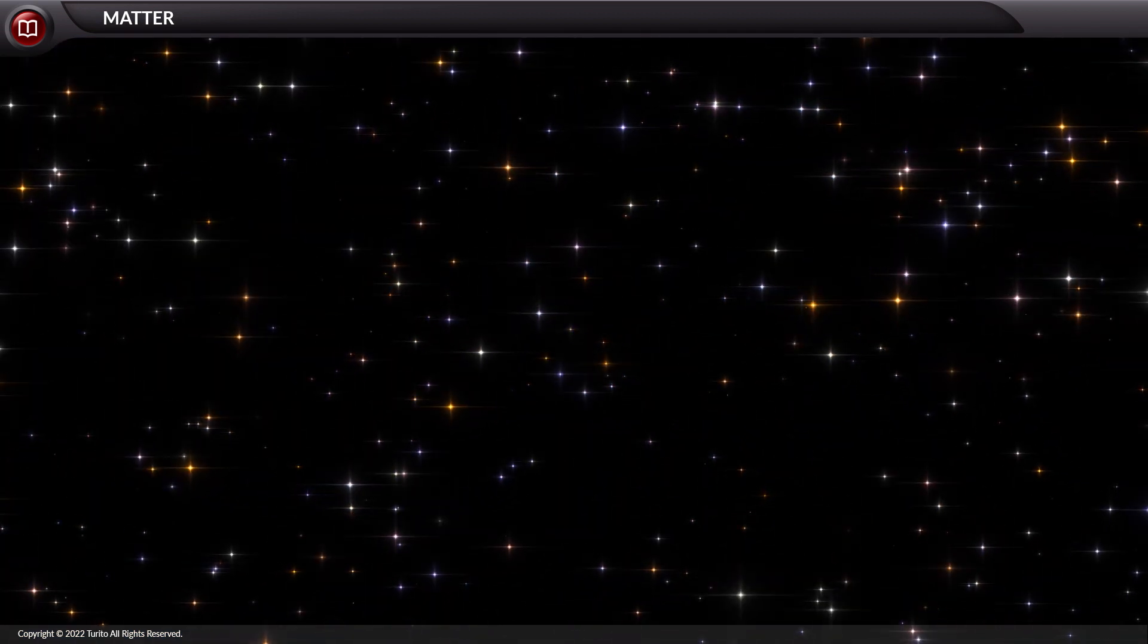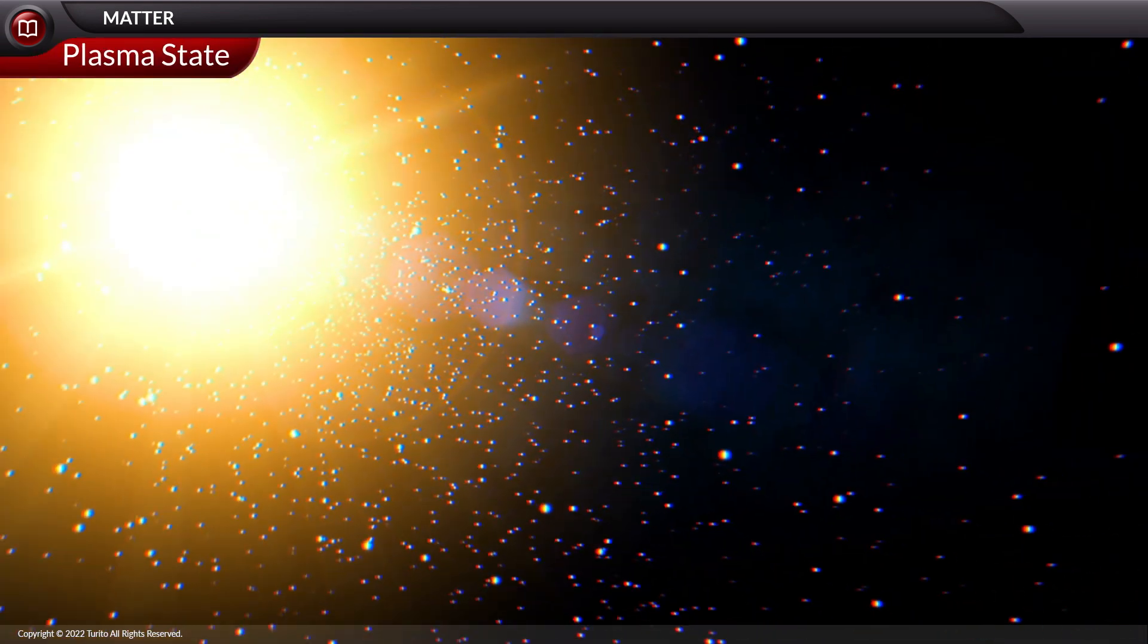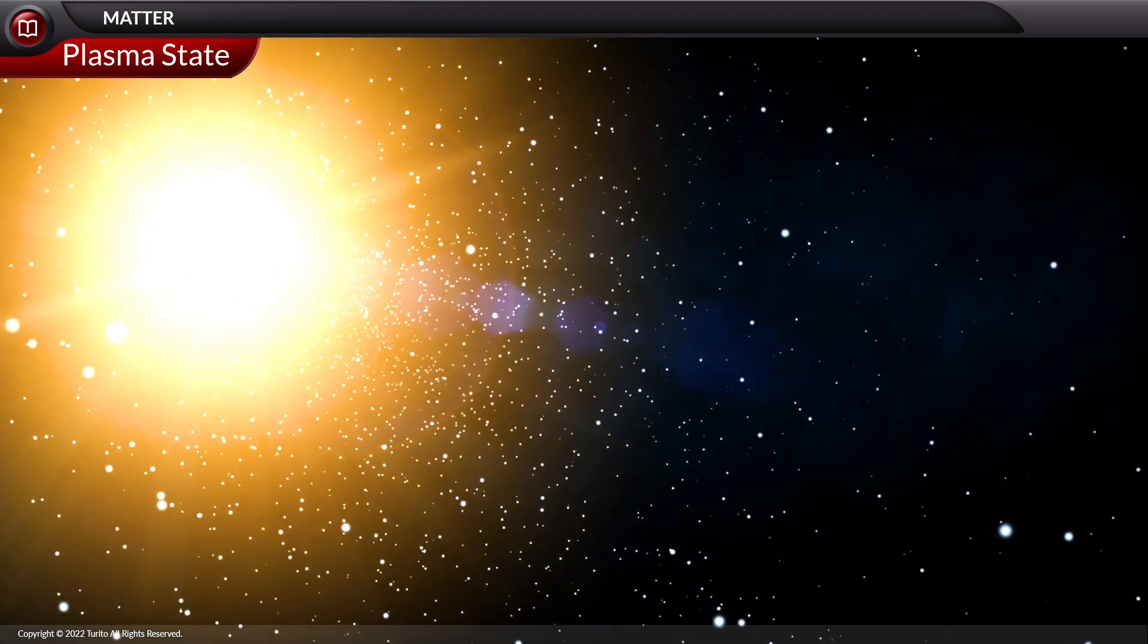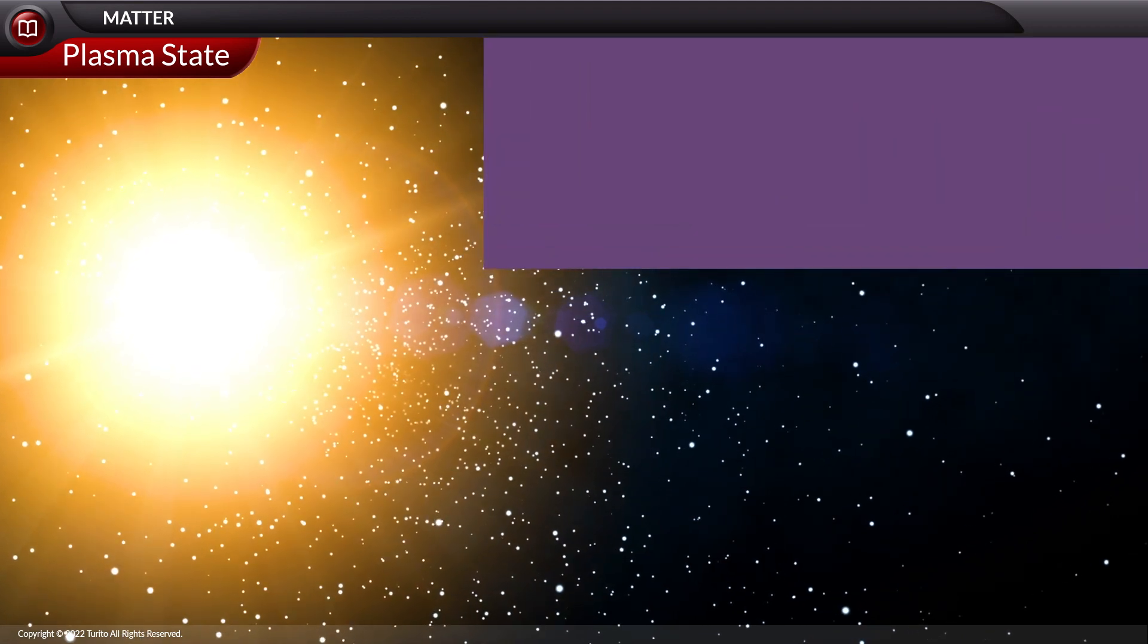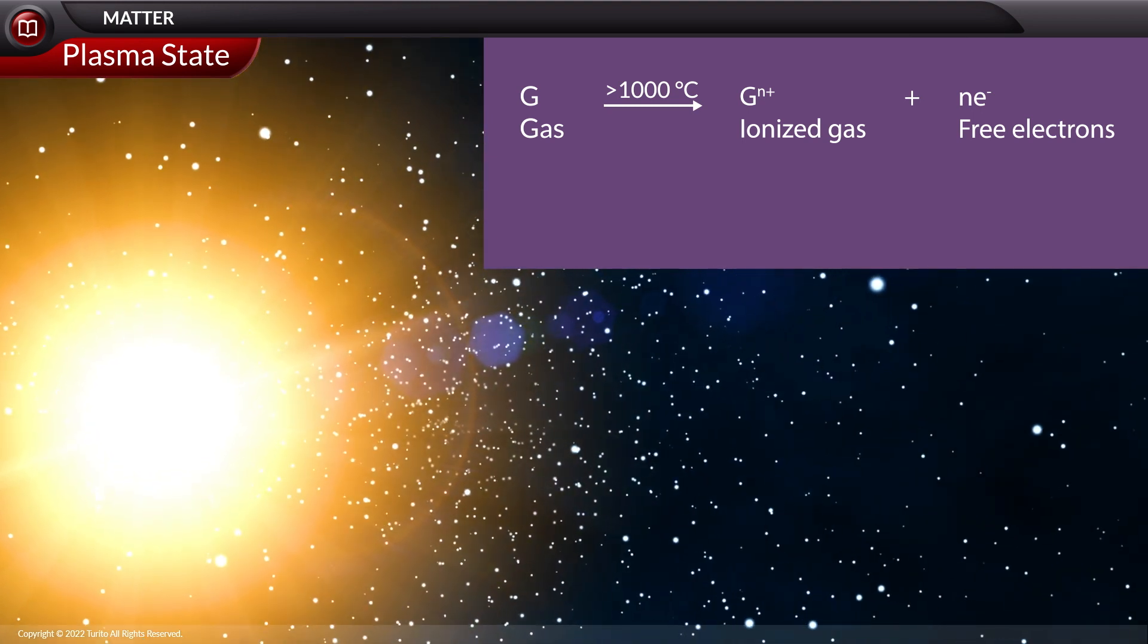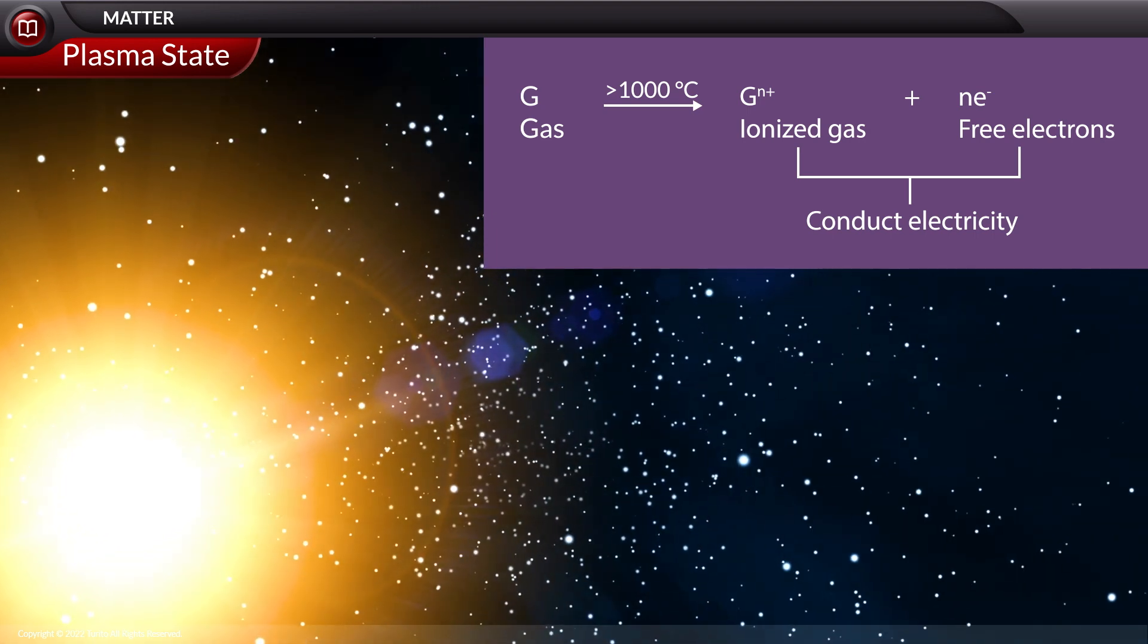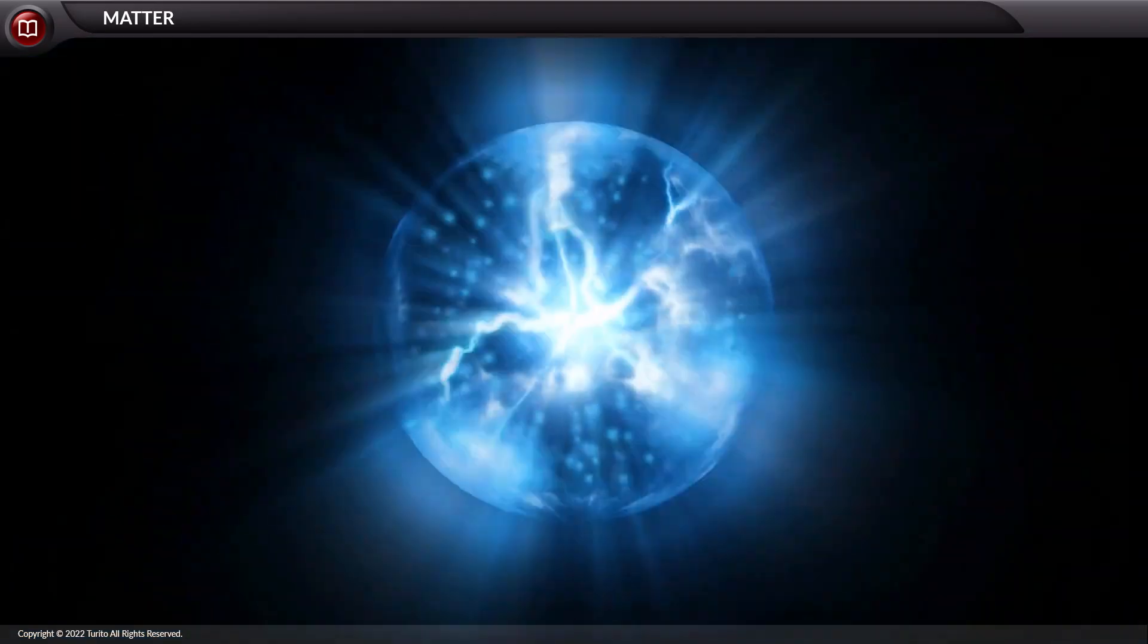Finally, let us discuss the fourth state of matter, that is, the plasma state. Let's use the example of a star to illustrate this. They have a high temperature on their surface. As a result, the gas will be ionized to form ionized gas particles and free electrons. They also have a strong ability to conduct electricity due to the presence of charged particles in them. They exhibit increased fluidity.